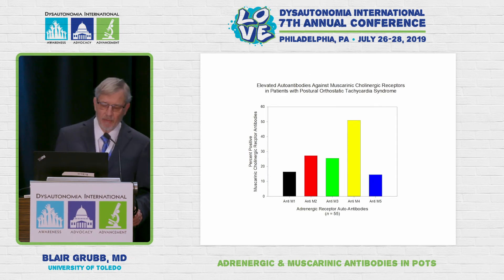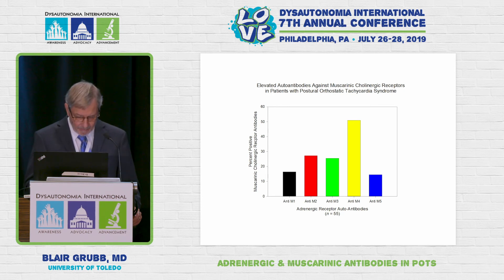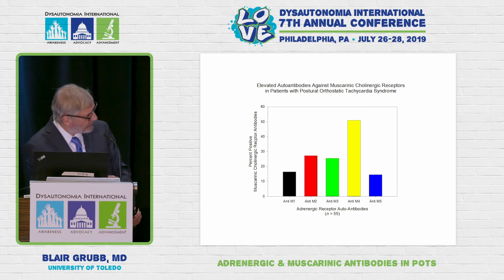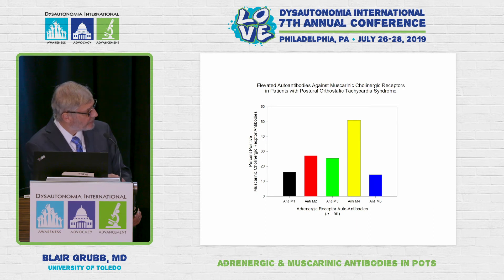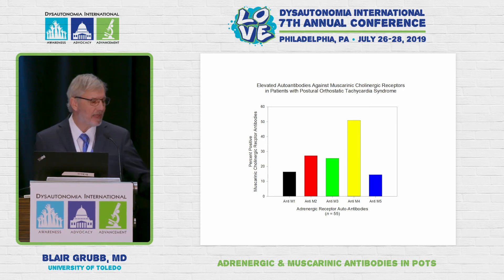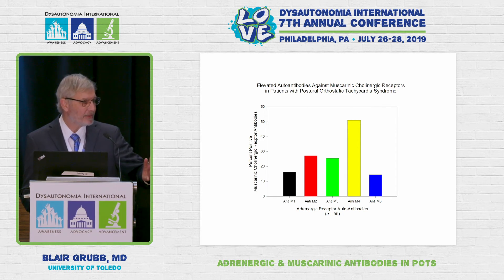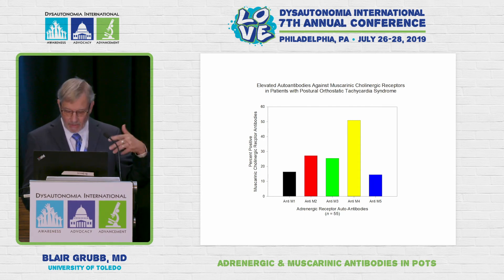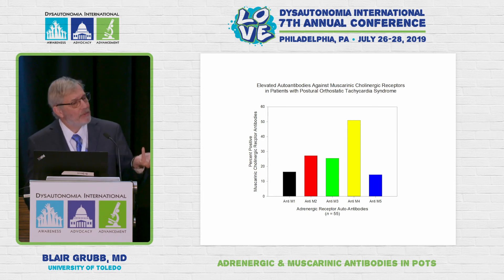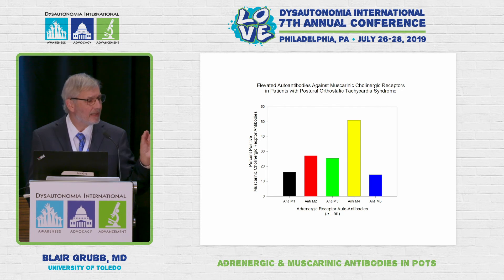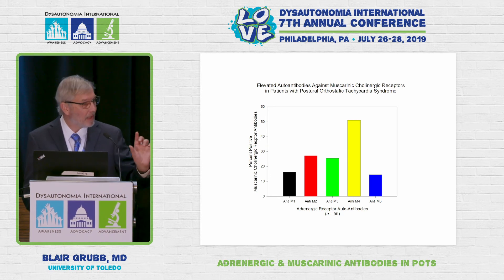Interestingly, there's a second group of receptors we looked at called muscarinic receptors, which govern a variety of things. For example, M3 muscarinic receptor autoantibodies are associated with Sjögren's. We found that 50 percent of patients who had elevated alpha-1 receptor antibody levels also had elevations in M4 muscarinic receptor autoantibody levels — and only the people with elevated alpha-1 receptor autoantibodies had these. We don't know what they do in people, but in dogs, cats, and rats they help govern bowel motility.